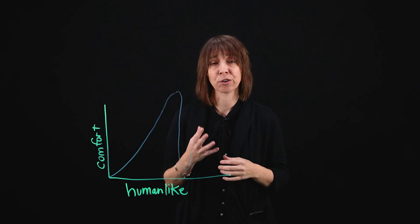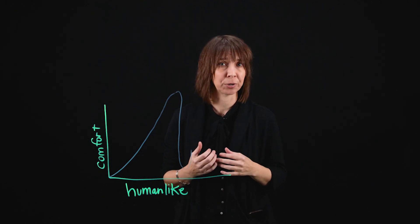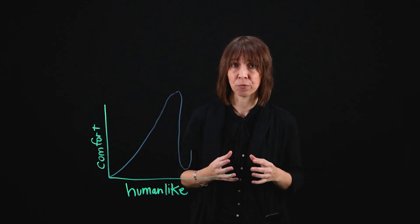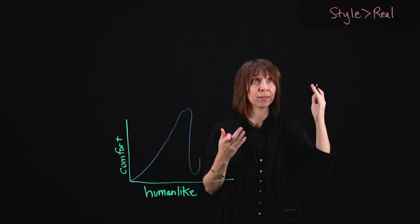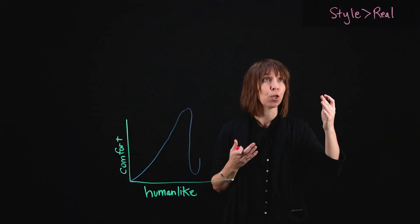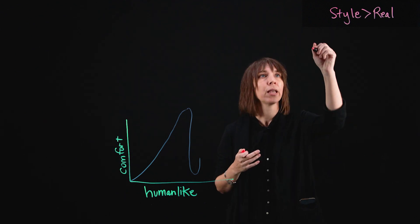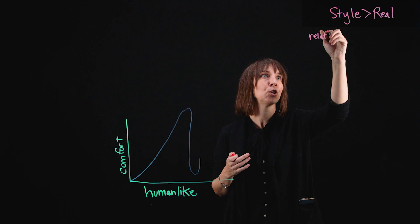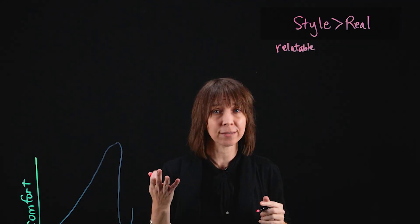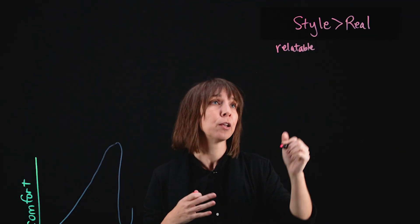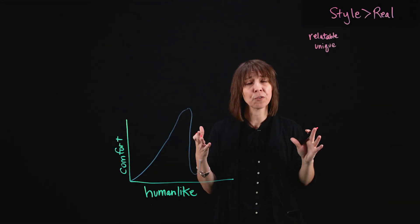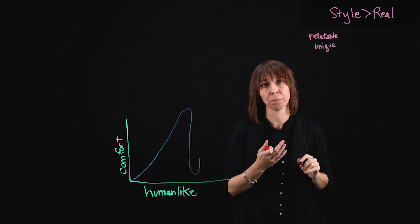So what can we do to avoid the uncanny valley? Users want to be able to meet their expectations quickly, and they want to have an experience that's transparent. The assistant should be both helpful and clear that it's not a human. We can choose stylization over realism — aim for relatable, but not perfectly human-like. Stylization can make your AI unique and memorable.